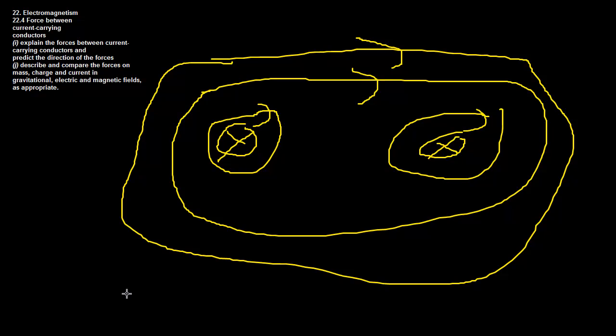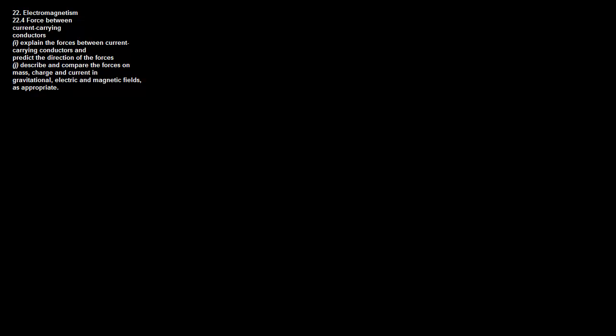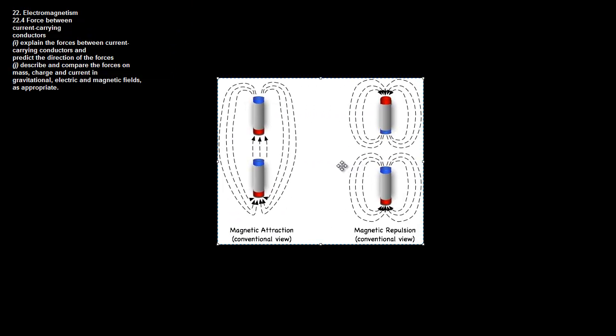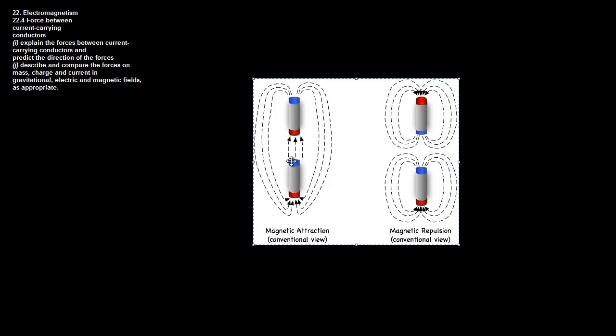The combined fields cause the wires to attract toward each other. When currents are in opposite directions, the magnetic fields cancel out and the wires repel. This is essentially the same as bar magnets: when fields are aligned, they attract and combine; when they are opposite, they repel and cancel each other out.